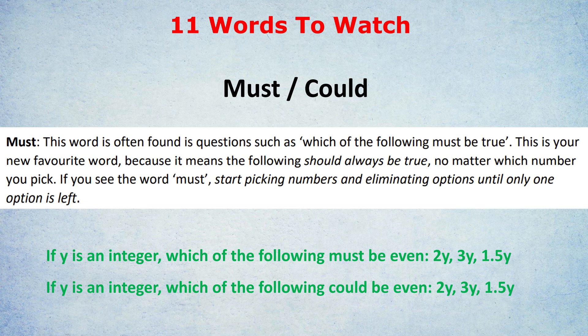With must, it must be every single example, no matter what number you pick, is correct. With could, you only need to find one example, and then you've proven it could be even. Big difference there.